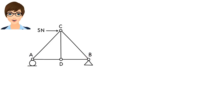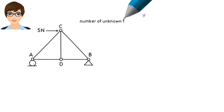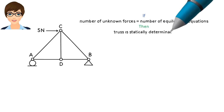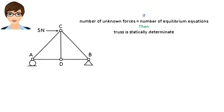The truss is said to be statically determinate if its member forces can be calculated solely using the equilibrium equations. Algebraically speaking, if the number of unknown forces equals the number of equilibrium equations, then the truss is said to be statically determinate.